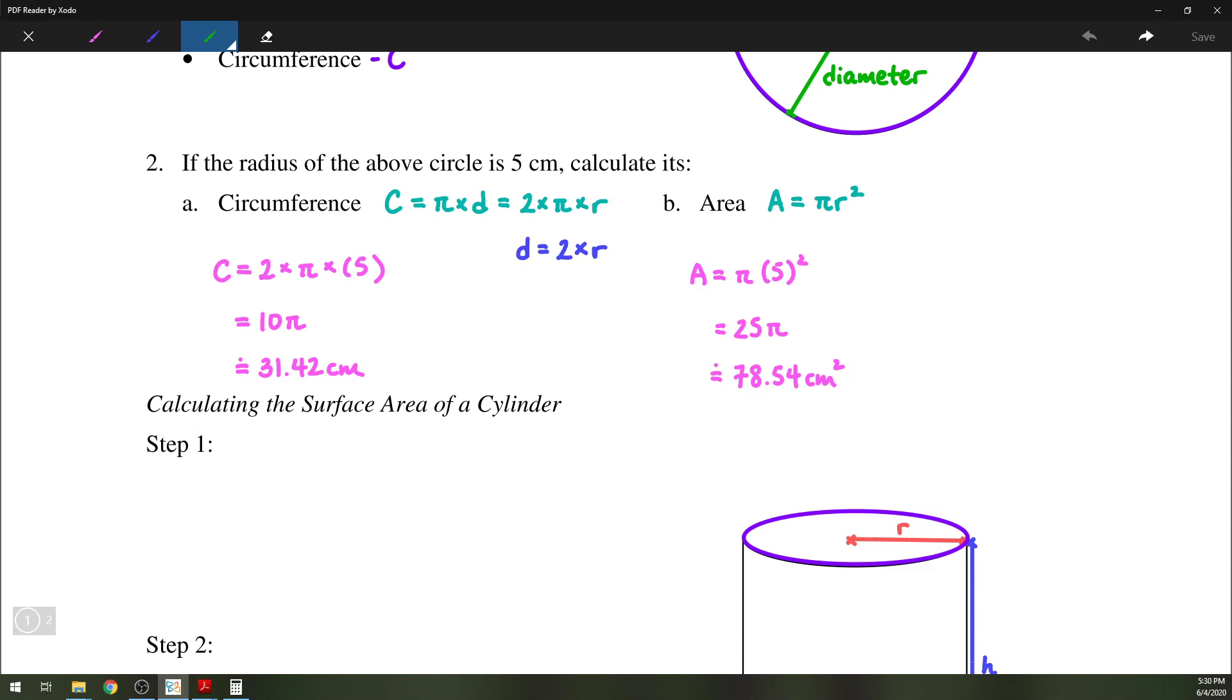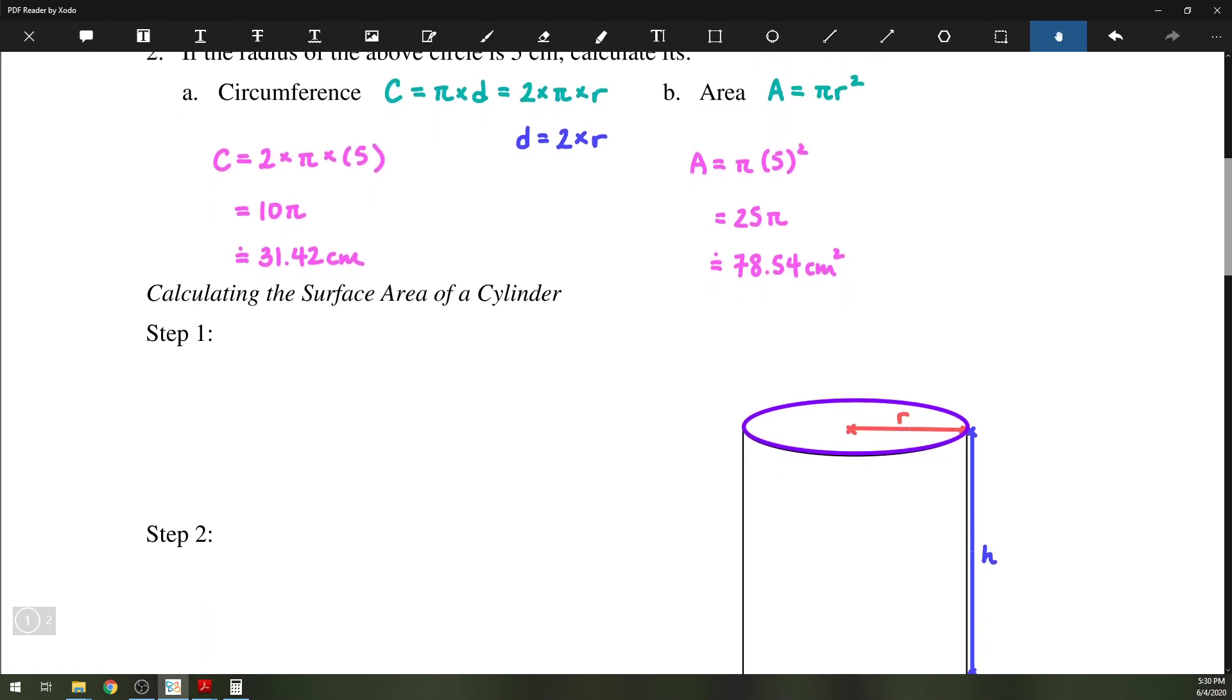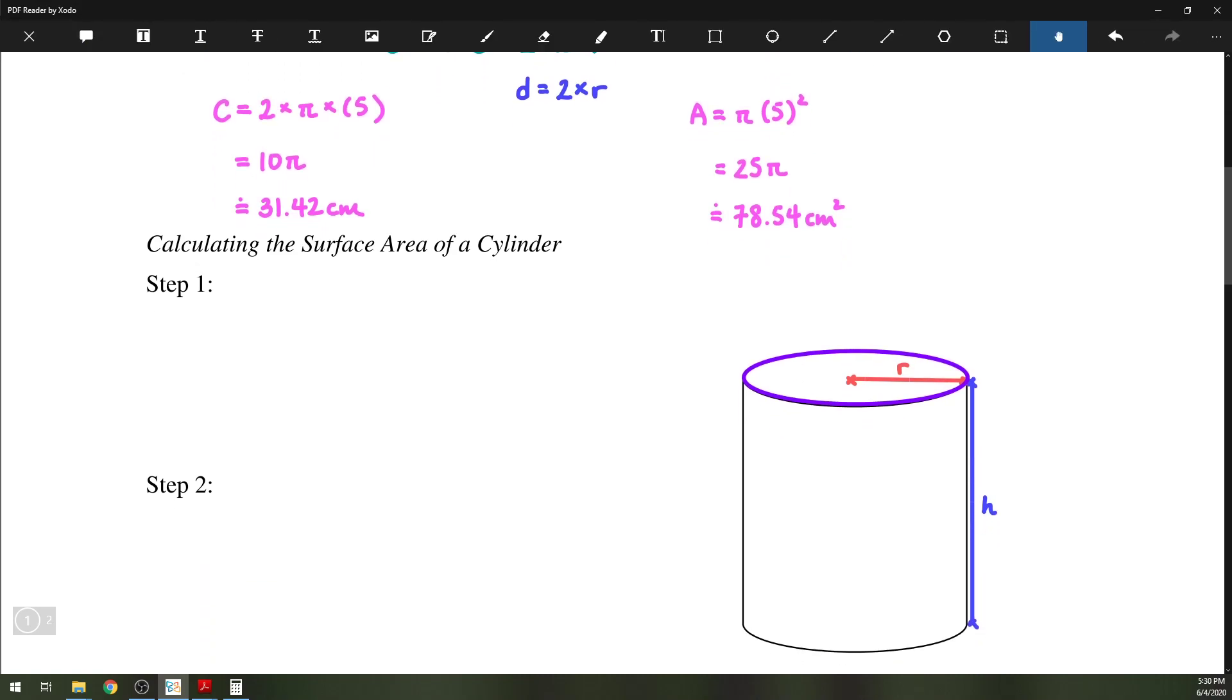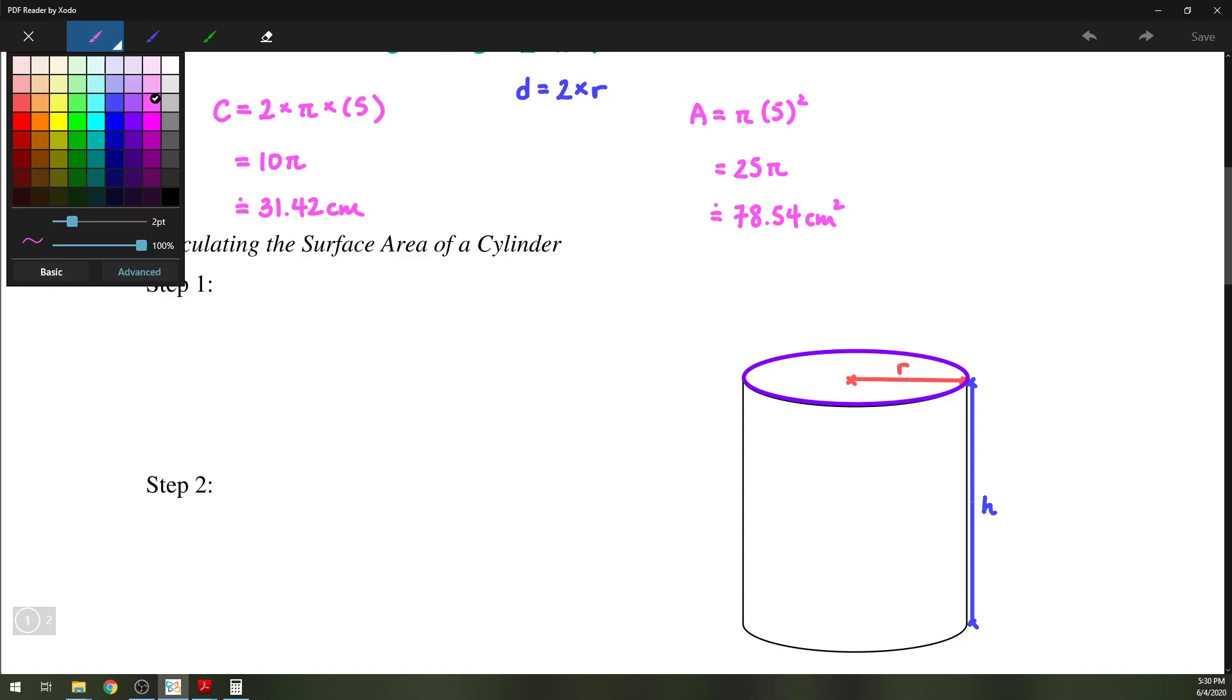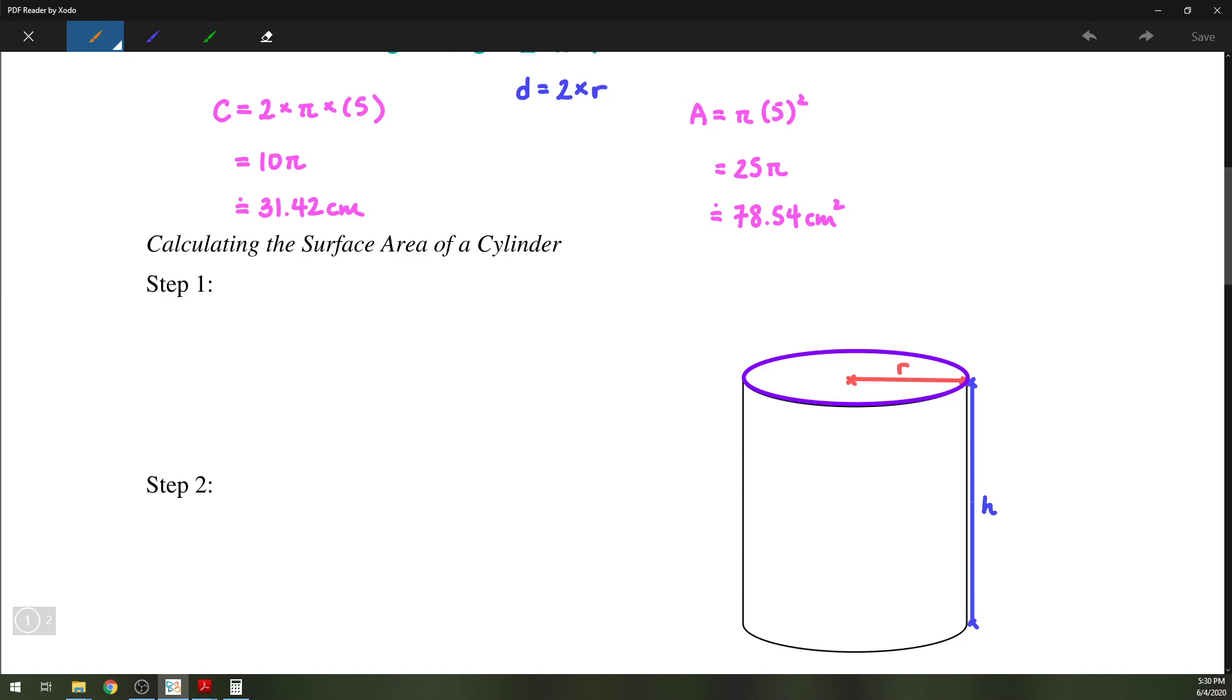So next up, we have the formula for calculating the surface area of a cylinder. Two numbers are going to be used here. We just need to know the radius and the height of the cylinder itself. So as you can see, a cylinder has a circle at the top and circle at the bottom. So the first part is to figure out the area of the two circles.